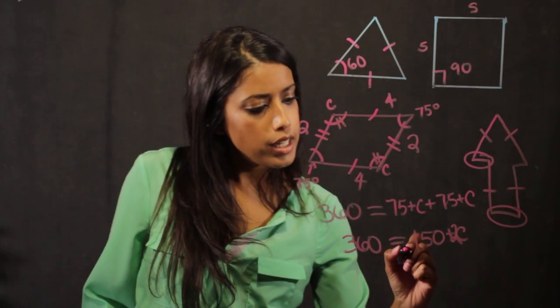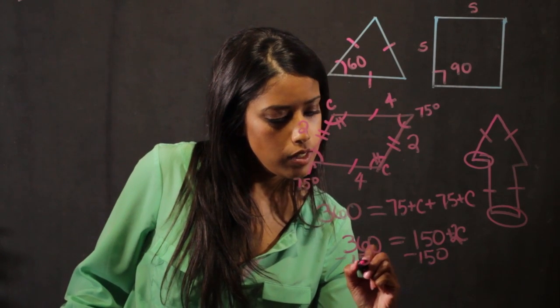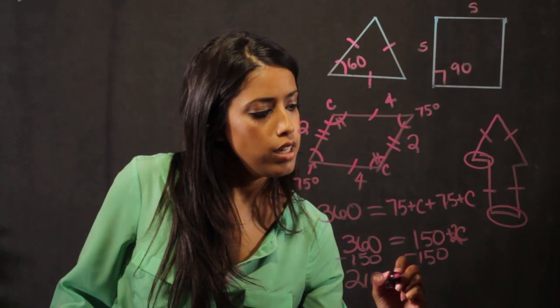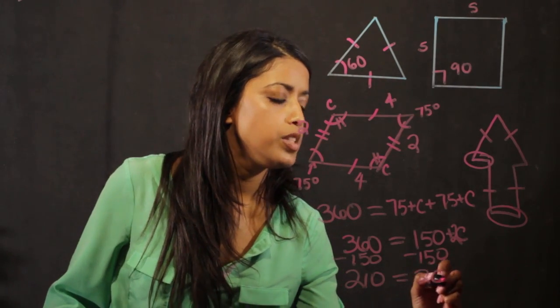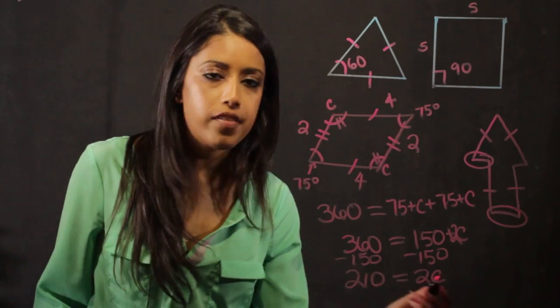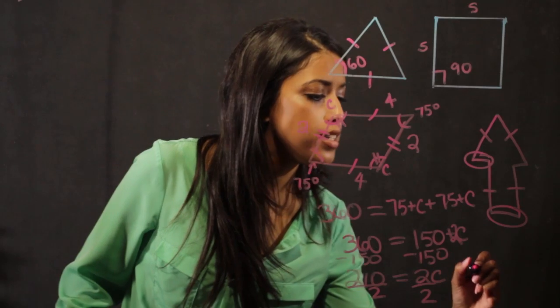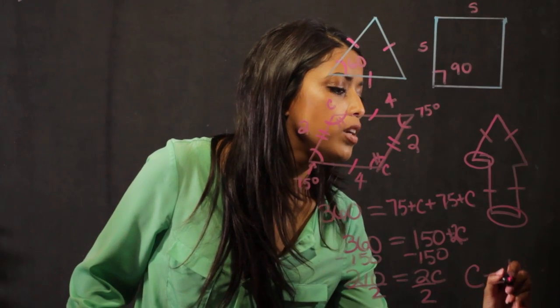And I need to move 150 to the other side. And I get 210 is equal to 2C. So if I want to solve for C and figure out what this angle is, I divide by 2. So I get C equal to 105.